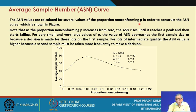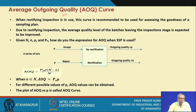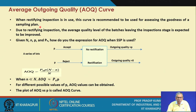The ASN values are calculated for several values of proportion non-conforming P in order to construct the ASN curve. When you consider several values of P, you get several values of ASN, and plotting these gives the ASN curve. Next, we move to the average outgoing quality (AOQ) curve, which is drawn as a performance measure when rectifying inspection is in vogue.